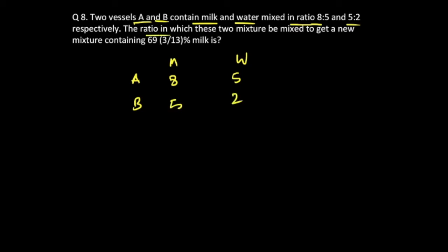So the ratio in which these two mixtures we mix to get a new mixture containing 69 and 3/13 percentage of milk. So milk's percentage value is given out to be 69 3 by 13 percentage. This is the next type in which we are dealing with percentage value.